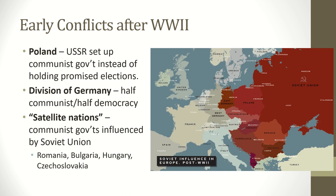Looking at the map, a couple of Soviet satellite nations would be Romania, Czechoslovakia, Hungary, and Yugoslavia — all influenced by the Soviet Union.